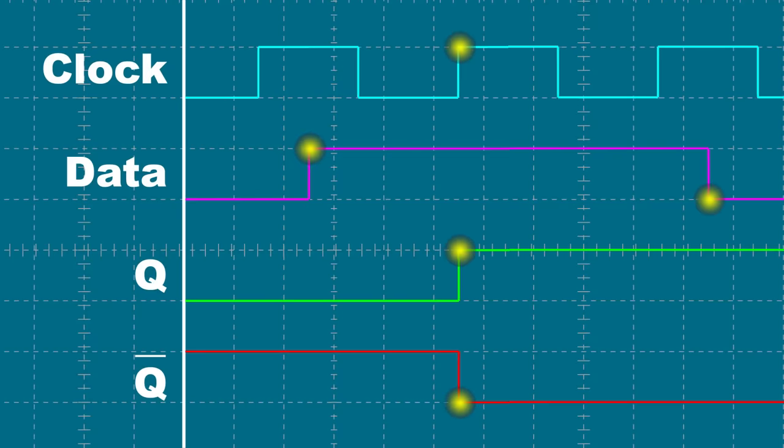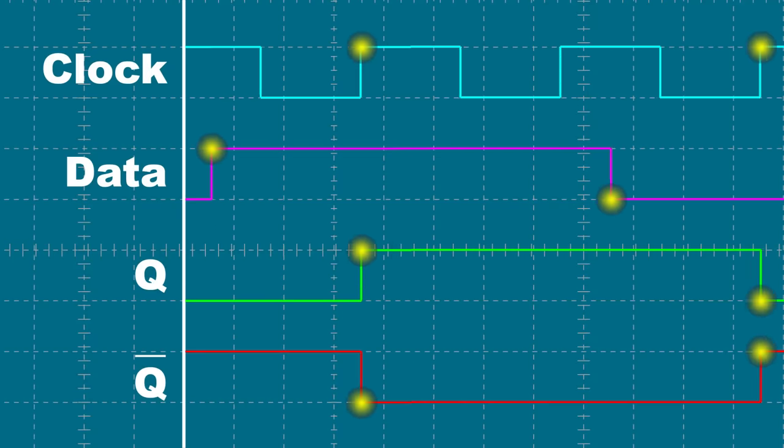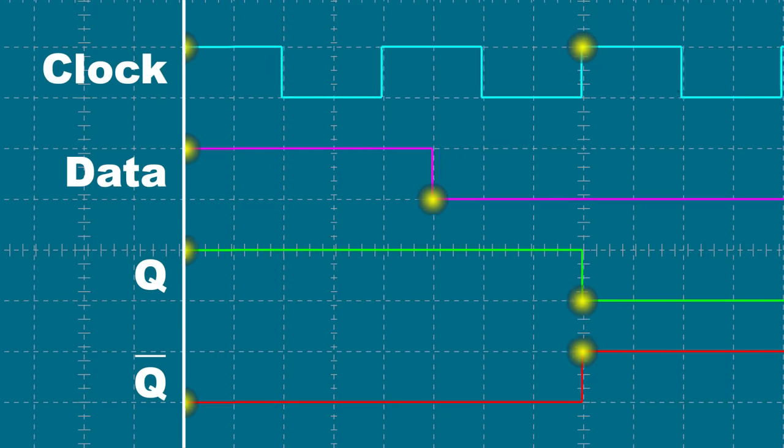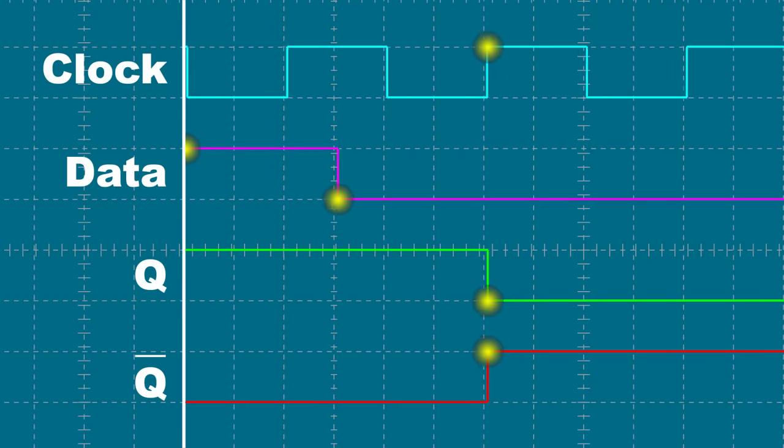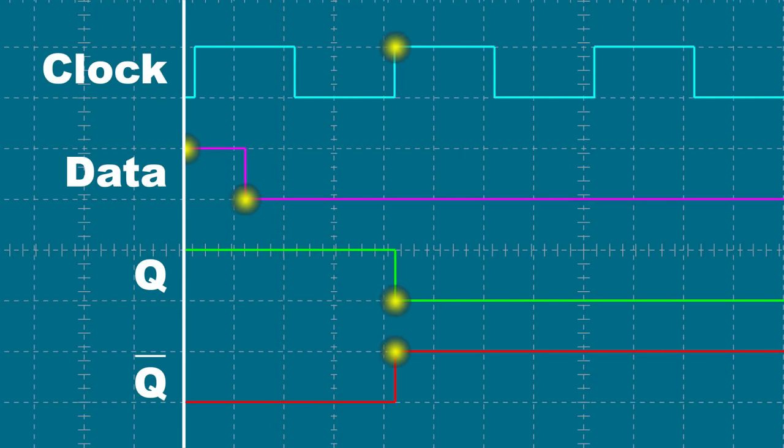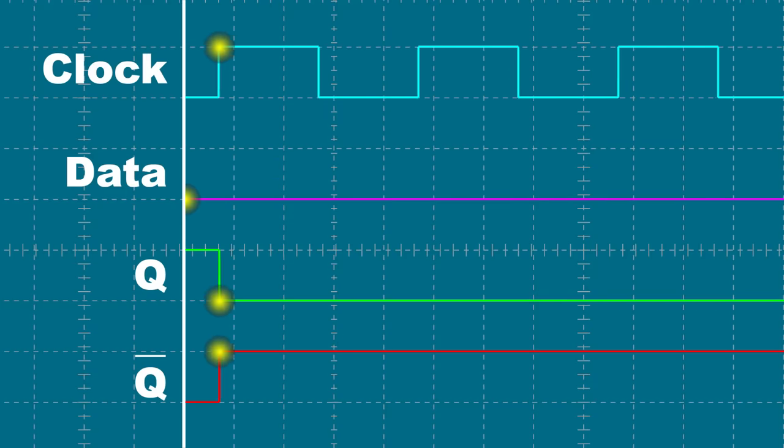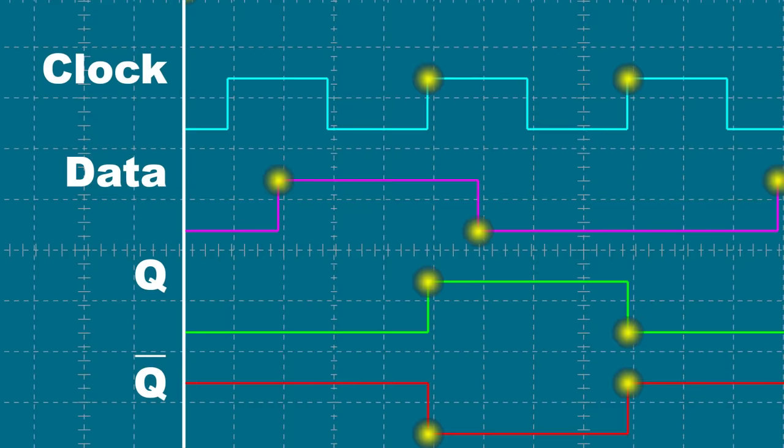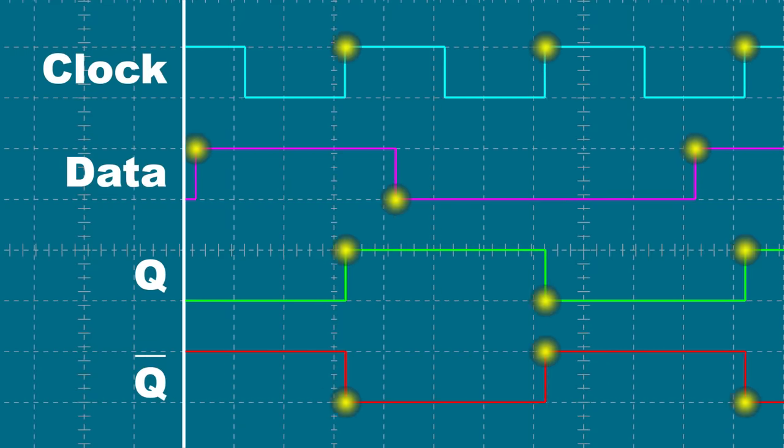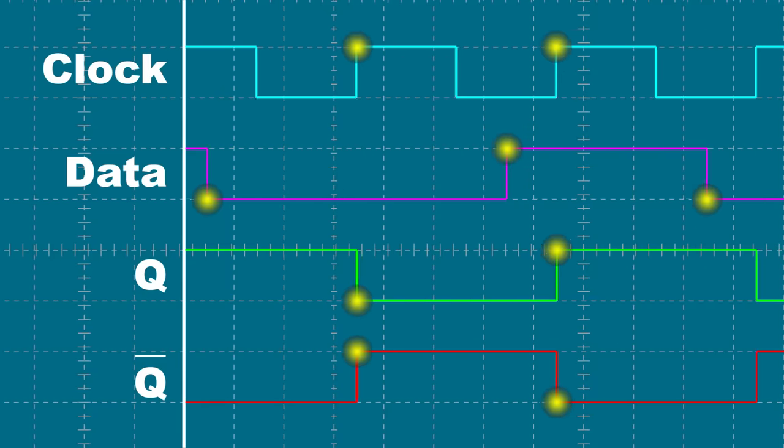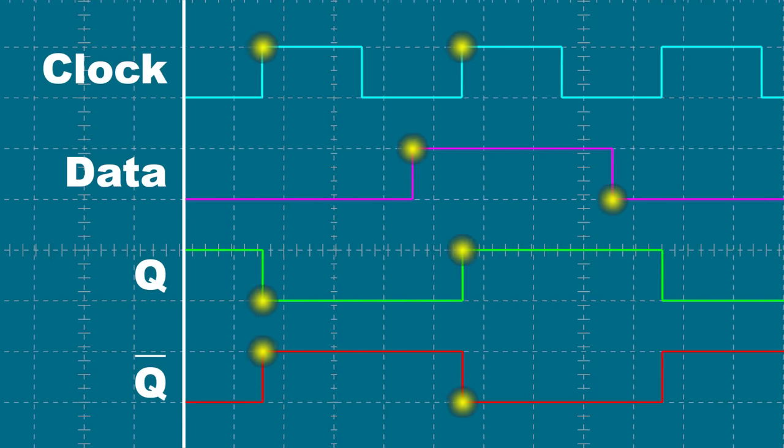The clock signal acts as an enable pin for the data input. If output Q is low and then the data signal goes high, on the next clock pulse, the data signal gets through and makes output Q go high. If the data signal goes low, output Q won't go low until the next clock pulse. So the clock acts like sort of a valve for the data signal. This data signal is considered to be synchronous as it changes the output in time with the clock signal.